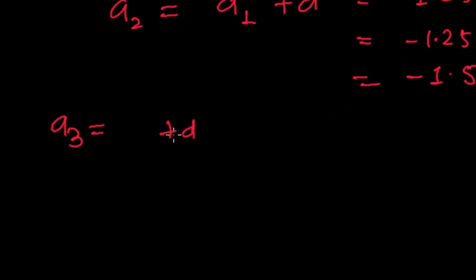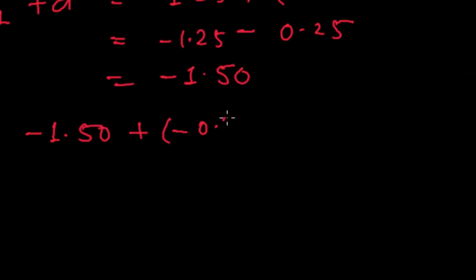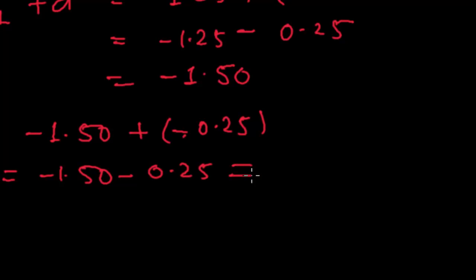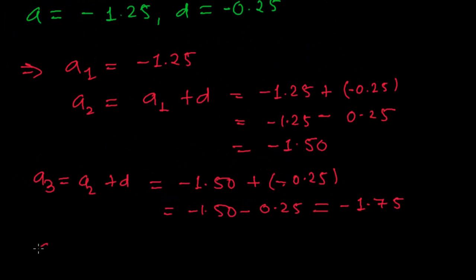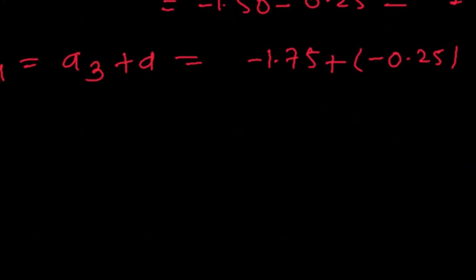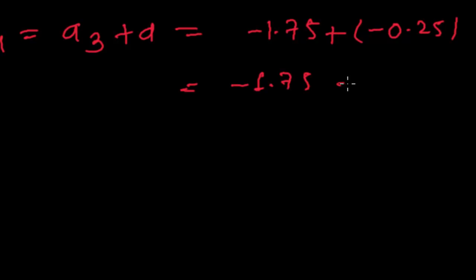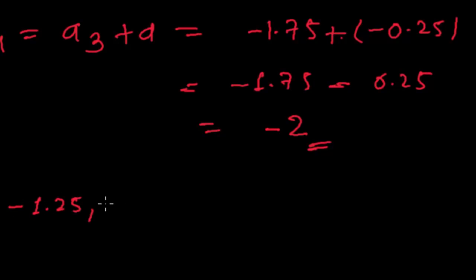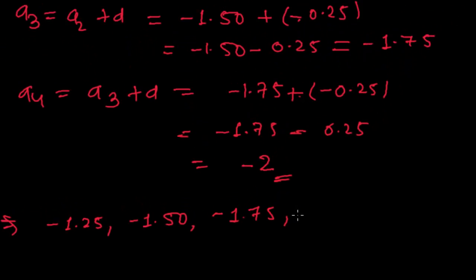Again the third term is the addition of the common difference to the second term. The second term is minus 1.50, plus minus 0.25, so minus 1.50 minus 0.25, that is negative 1.75. And the fourth term is the third term plus the common difference. The third term is negative 1.75 plus negative 0.25, so minus 1.75 minus 0.25, that is negative 2. So our arithmetic progression is: minus 1.25, minus 1.50, minus 1.75, and negative 2, and so on.